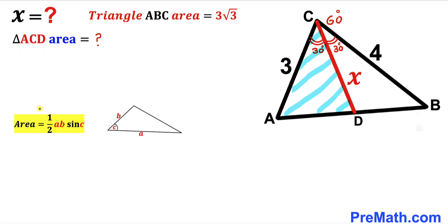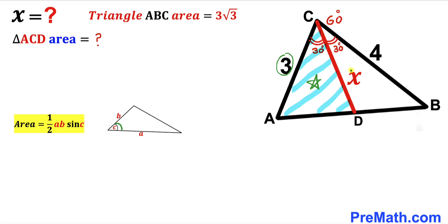Let's recall the area of a triangle formula once again: Area equals one half times A times B times sine of angle C, where A and B are two side lengths and C is the angle between them. For triangle ACD, the two side lengths are 3 and X, and the angle between them is 30 degrees.